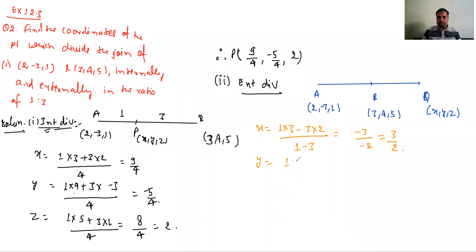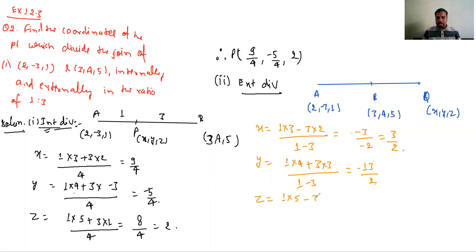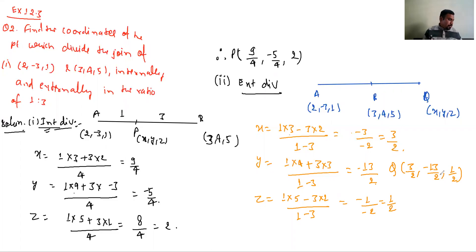Next ho gaya Y. Y equal to banega (1×4 - 3×(-3)) upon (1-3), to yeh ho gaya (4 + 9) = 13, matlab minus 13 by 2. Next ho gaya Z. Z equal to (1×5 - 3×1) upon (1-3), to (5-3) upon minus 2 = 2 upon minus 2 = minus 1. To Q ka coordinate ho gaya (3/2, -13/2, -1).